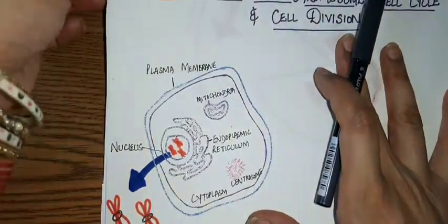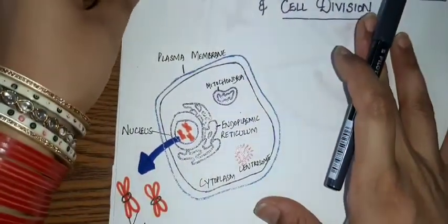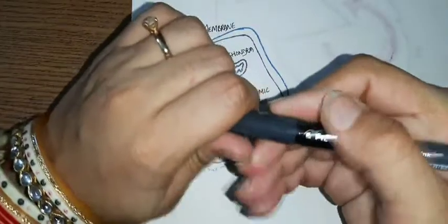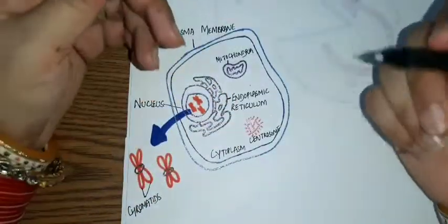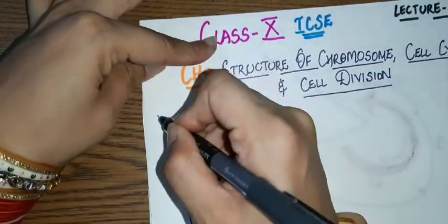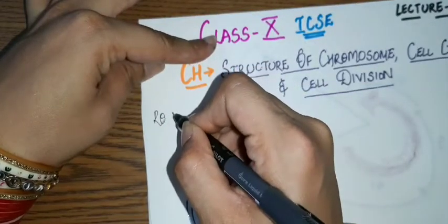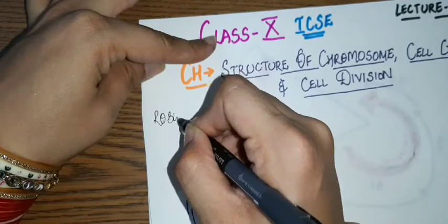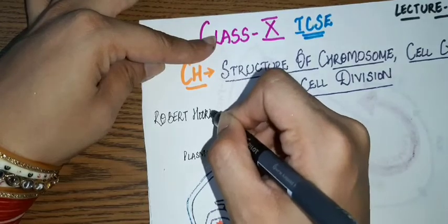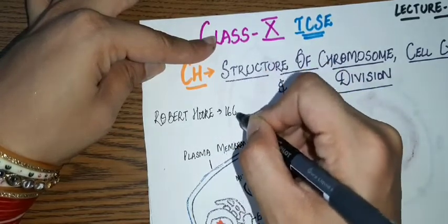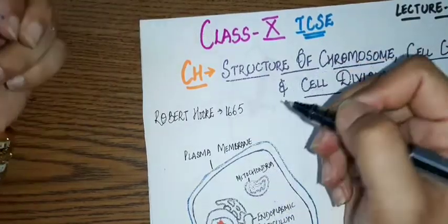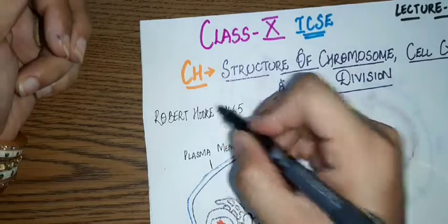What is a cell? In your 9th standard, you have already studied in detail about the cell. What is a cell and how it was discovered? First of all, cell was discovered by Robert Hooke, in the year 1665.